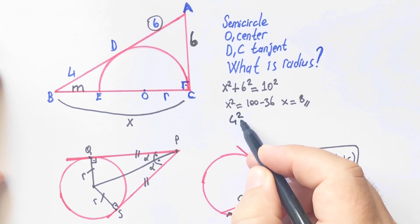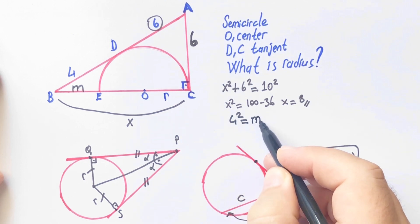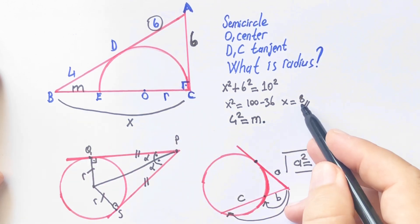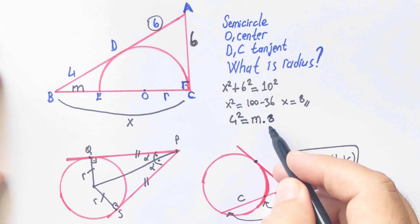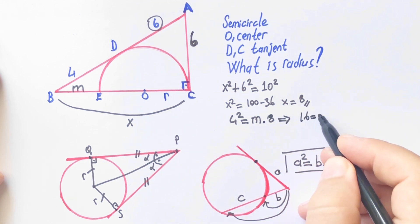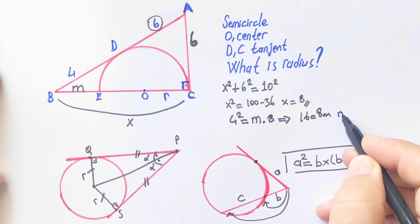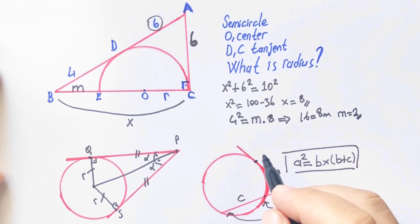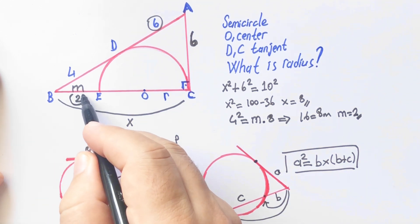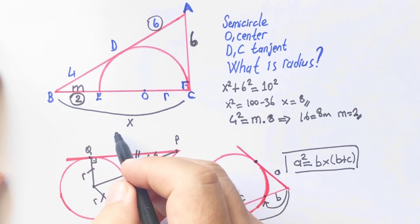So 4 squared equals M times whole length. 16 equals 8M, we find M equals 2 units. Let's write here 2 units and we know that BC is 8 units.